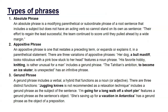An appositive phrase is one that restates or expands on a preceding term in a parenthetical statement. There are three variations: 'Her dog, a bull mastiff, looks ridiculous with a pink bow' features a noun phrase; 'His favorite hobby, knitting, is rather unusual for a man' includes a gerund phrase; 'The Tahitian's ambition to become an ice skater is unexpected' is an infinitive phrase.